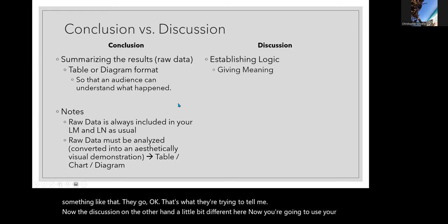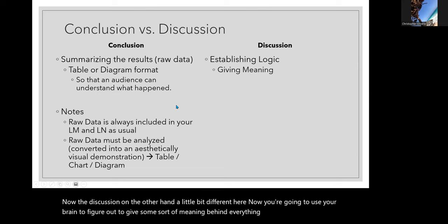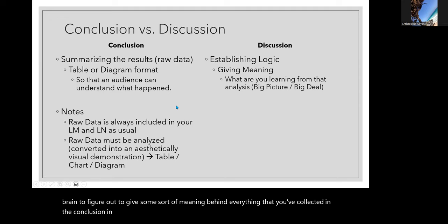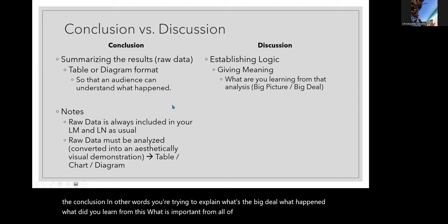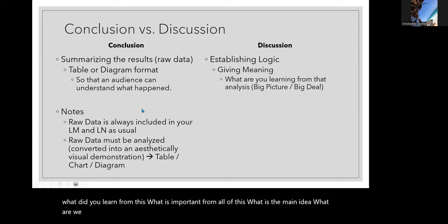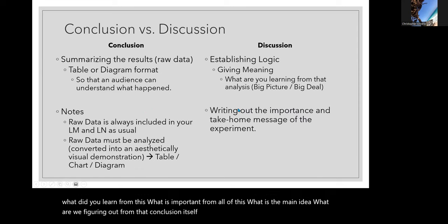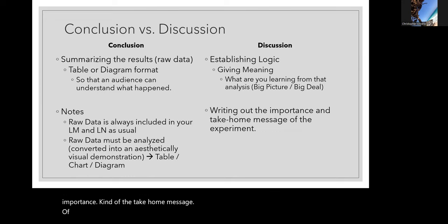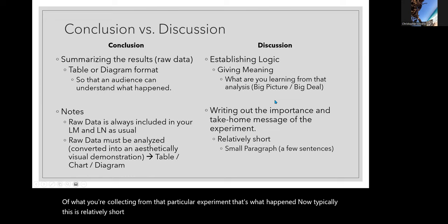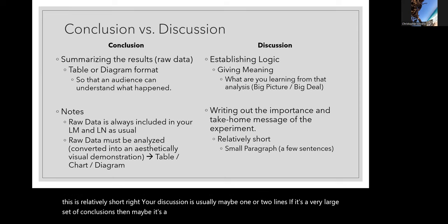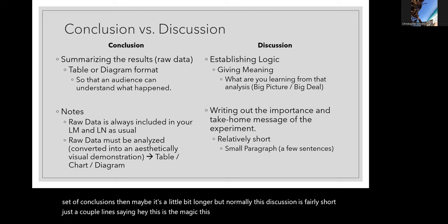The discussion, on the other hand, is a little different. Here you're going to use your brain to give some meaning behind everything you collected in the conclusion — explaining what's the big deal, what happened, what did you learn, what's important, what's the main idea. You're writing out the importance, the take-home message from that particular experiment. Typically the discussion is relatively short — maybe one or two lines, or a little longer if there's a large set of conclusions — just a couple of lines saying 'this is what we learned, this is what was really interesting.'